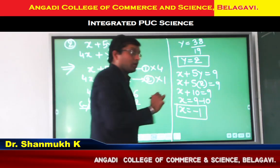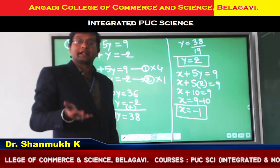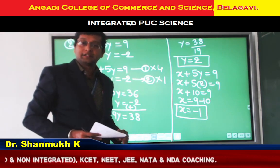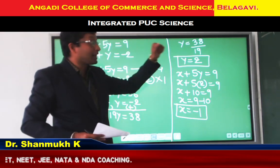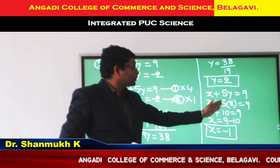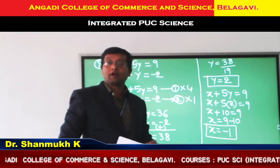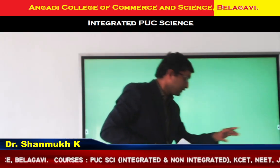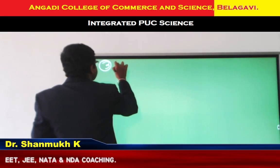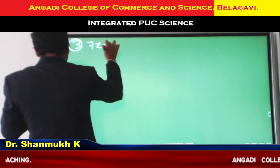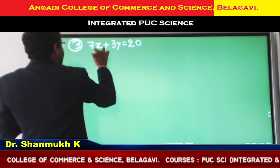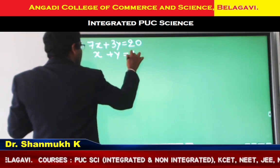By eliminating either X or Y variable, we obtain the value of one variable. In this example, we got Y as 2. Then taking any one equation and substituting the Y value, we obtain X. So now we will move to the third example. Third example: solve 7X plus 3Y equal to 20, and X plus Y equal to 4.